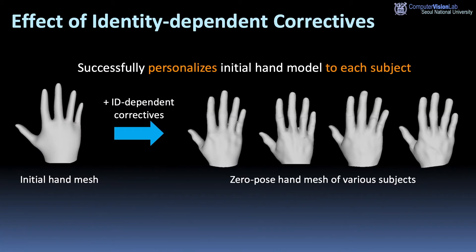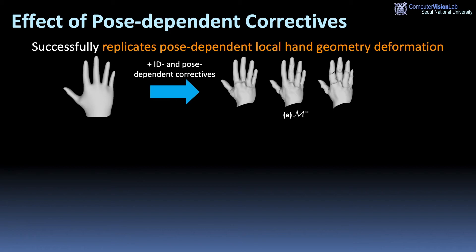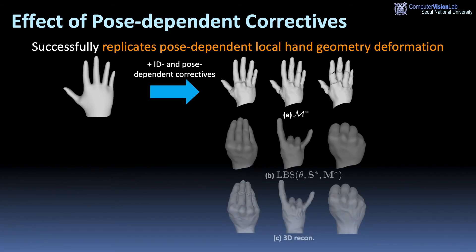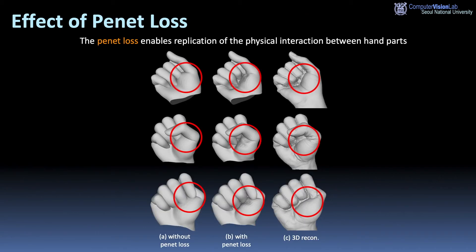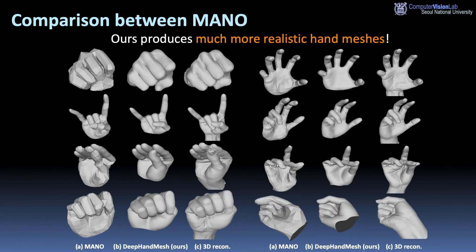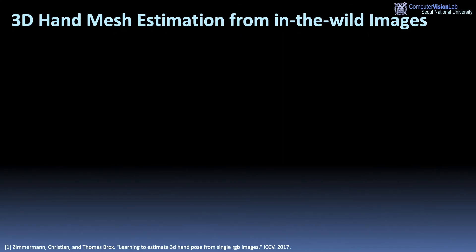This figure shows the effect of identity-dependent correctives. It successfully personalizes the initial hand model to each subject. This shows the effect of pose-dependent correctives — it successfully replicates pose-dependent local hand geometry deformation. Our newly designed penetration avoidance loss enables replication of physical interaction between hand parts. Our deep-hand mesh produces much more realistic hand meshes than MANO.